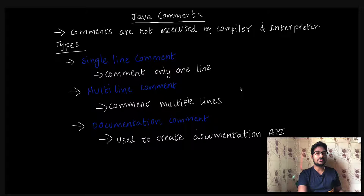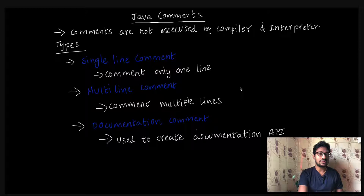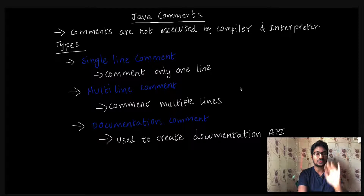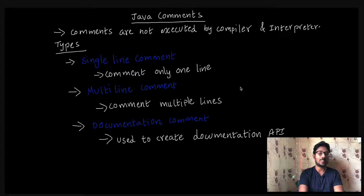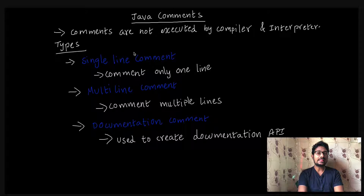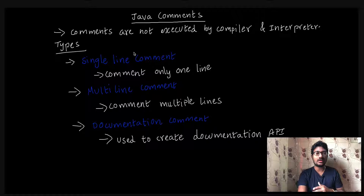Comments are used to add information or notes in your code. A line with a comment has a meaning — it helps us understand what that line of code is doing. That's why we use comments.